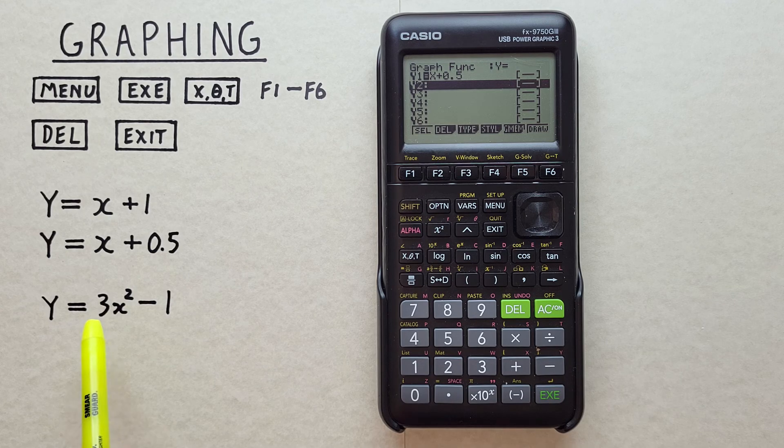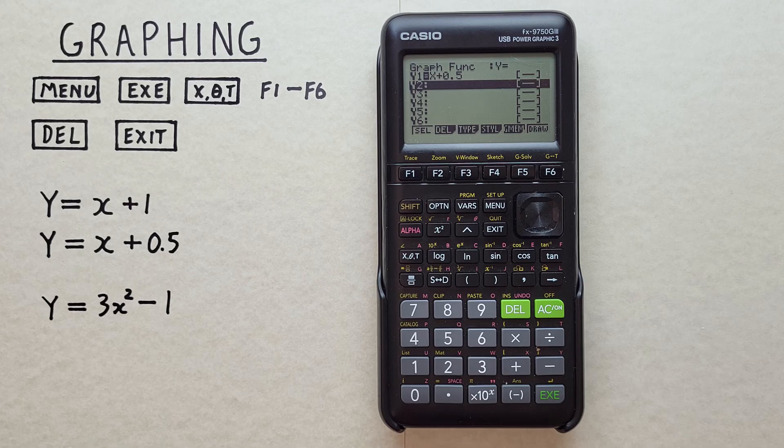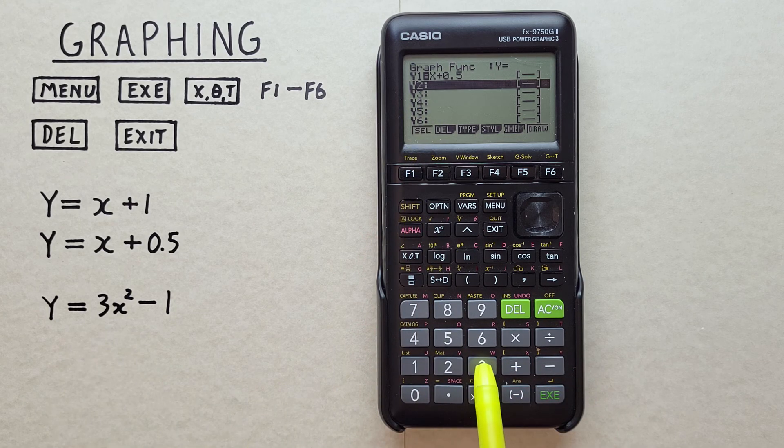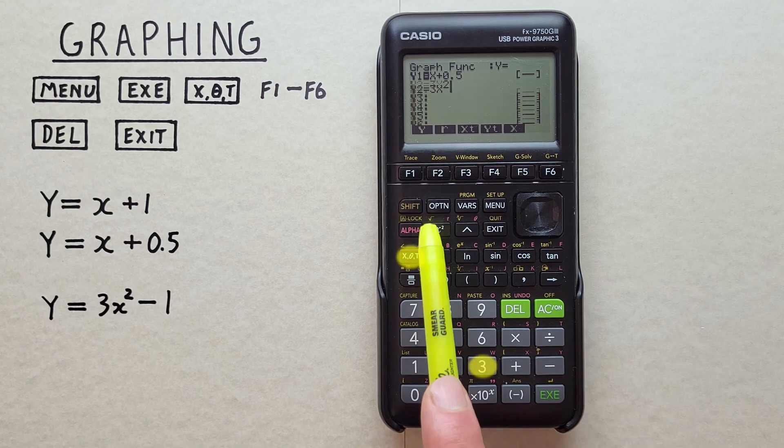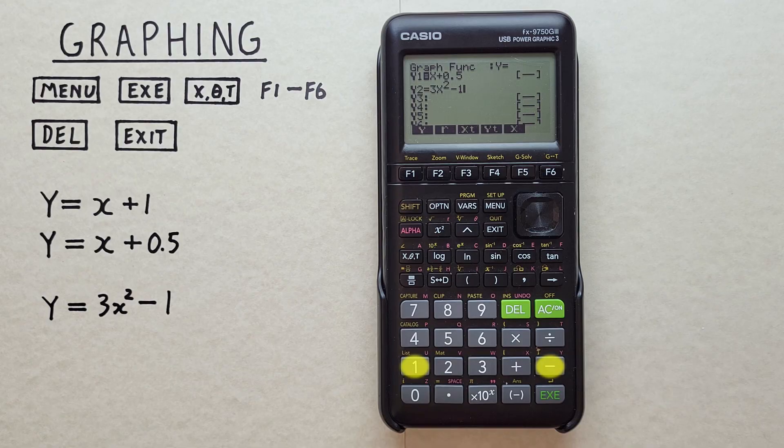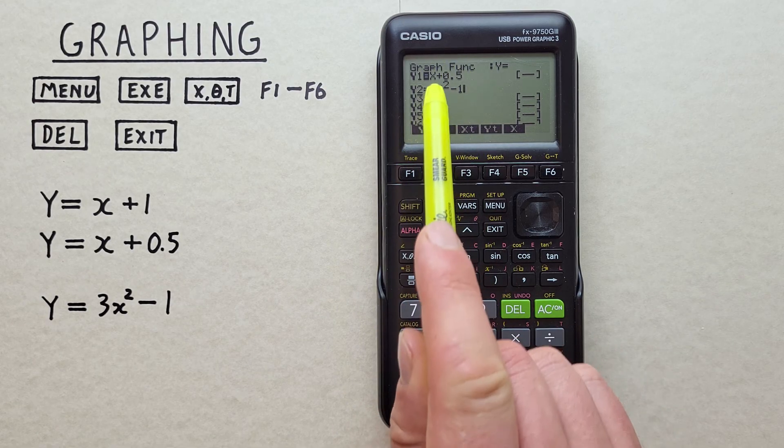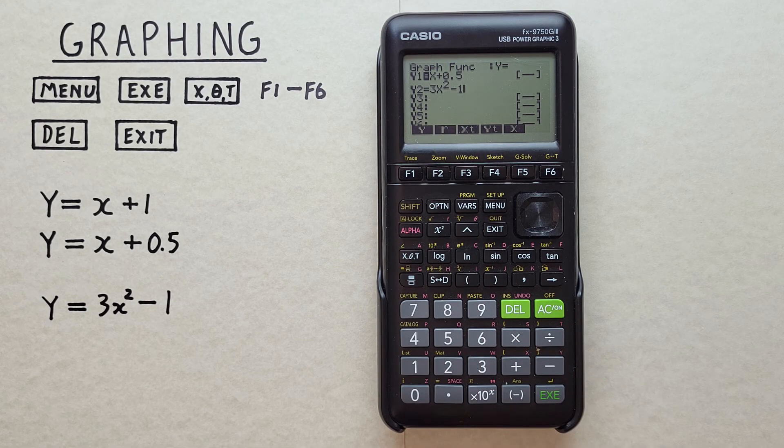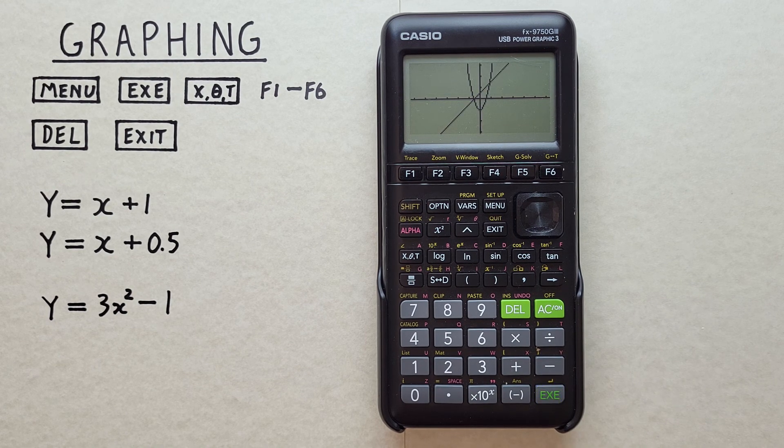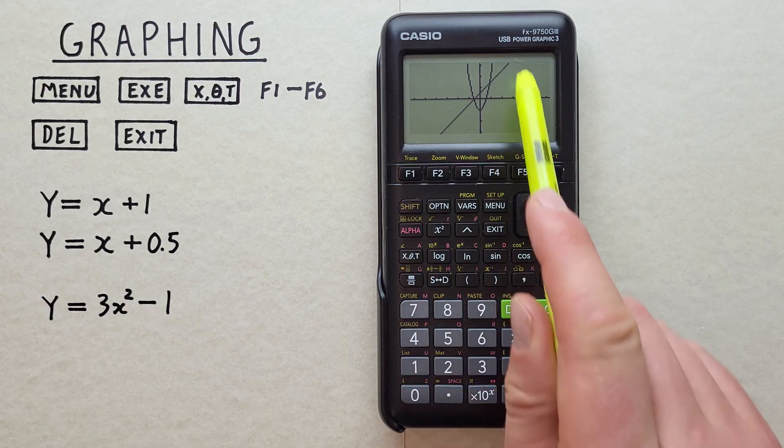Let's enter another one. Let's enter 3X squared minus 1. So we can just scroll down to our Y2 and enter the next one here. So 3X squared minus 1. There we go. Now we've got both functions entered. And if we want to view them, we can hit the EXE twice. And there we go. There's both of our functions.